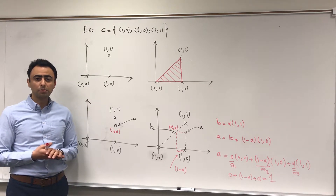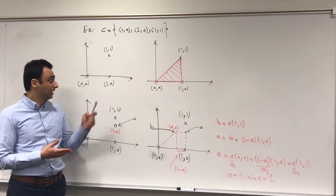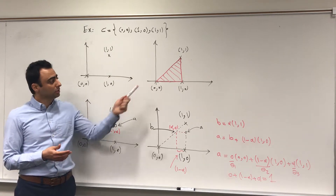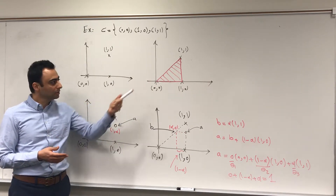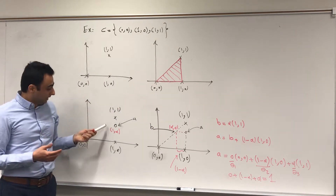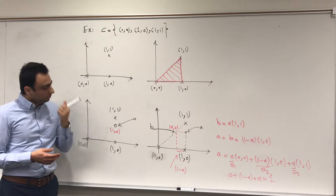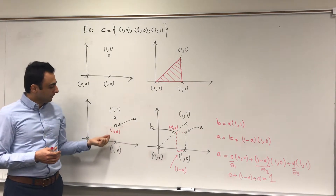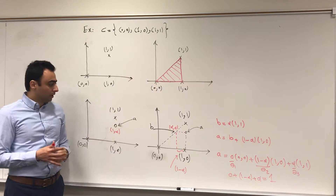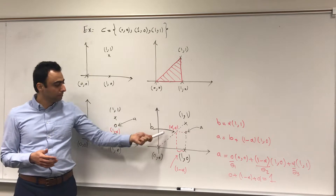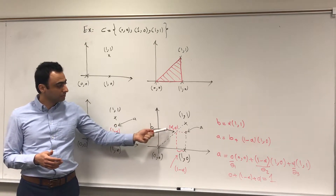Here is an example of a convex hull using a set C that contains three points in R²: (0,0), (1,0), and (1,1). These three points have a convex hull which is a triangle. The question is: how can we get this triangle using these three points?